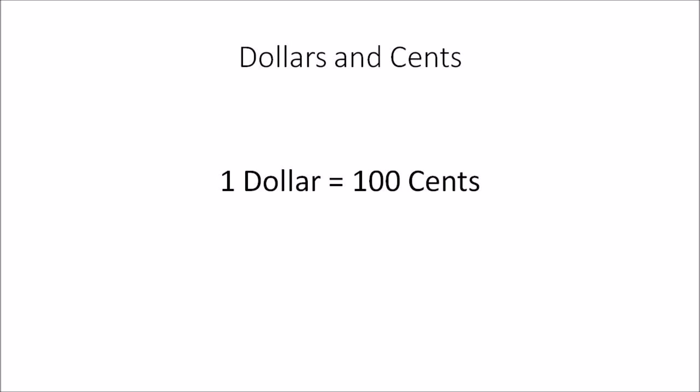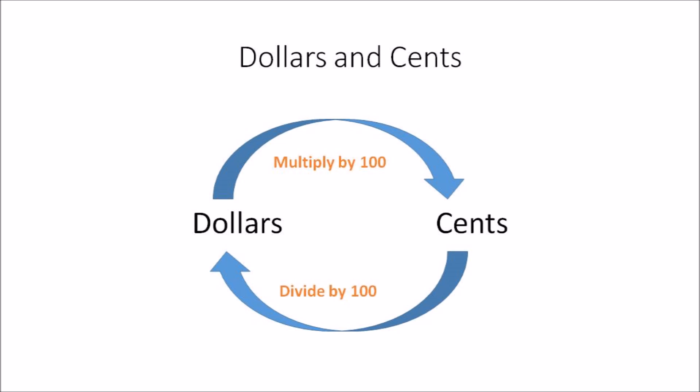Hello everyone. In this video I'll show you how you can easily convert between dollars and cents. One dollar equals 100 cents, or in other words, 100 cents make a dollar. If you need to convert from dollars to cents, all you need to do is multiply the amount you have in dollars by 100. And if you need to convert cents to dollars, you divide the amount you have in cents by 100.